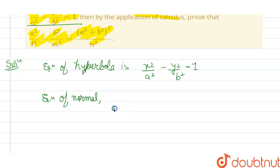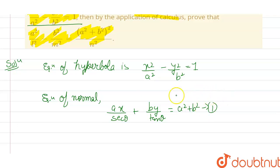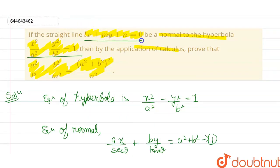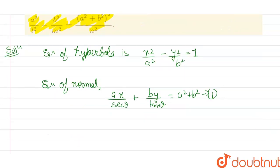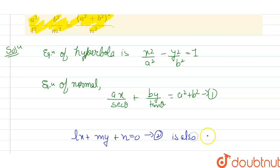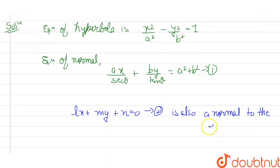The question says that the line Lx plus My plus N equals to 0 is also a normal to the hyperbola. So I can say that Lx plus My plus N equals to 0 is equation number two, and it is also a normal to the hyperbola. So now I'm going to compare these two equations.